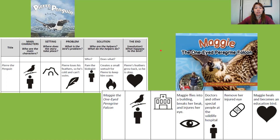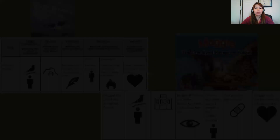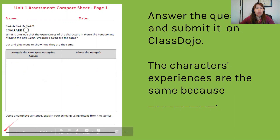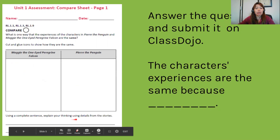You can pause here to study these two charts so you can compare these two stories. When you are ready, you are going to complete this chart and answer the question: what is one way that the experiences of the characters in Pierre the Penguin and Maggie the One-Eyed Peregrine Falcon are the same? You can use the icons and draw to show how they're the same, and using a complete sentence, explain your thinking using details and evidence from the stories.